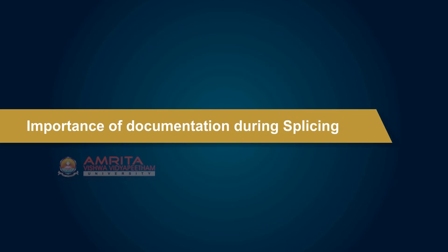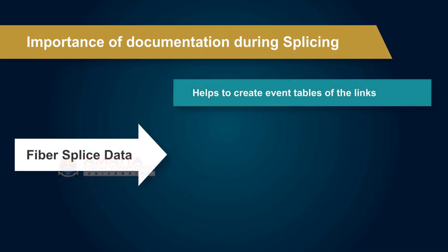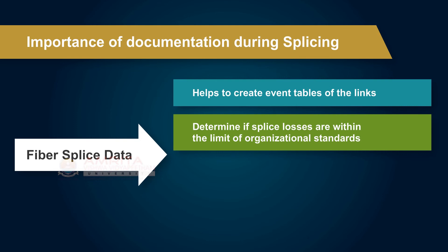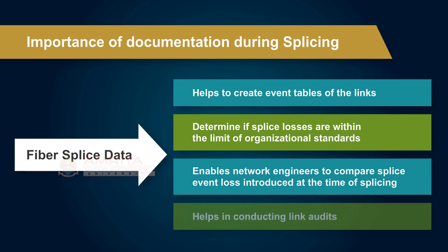Importance of documentation during splicing: it is essential to document the data on fiber splice joints during splicing. Fiber splice data helps to create event tables of the links, determine if splice losses are within the limit of organizational standards, enables network engineers to compare splice event loss introduced at the time of splicing, and helps in conducting link audits.